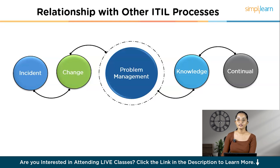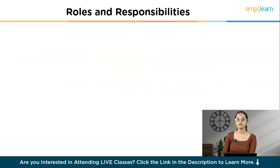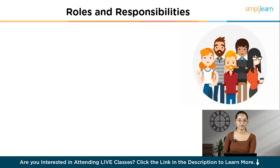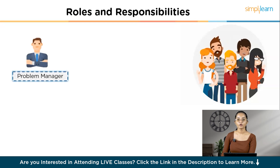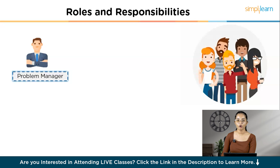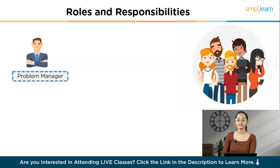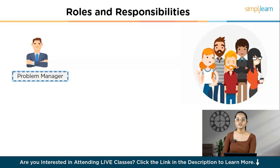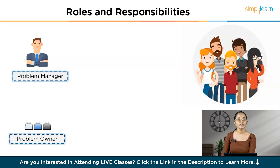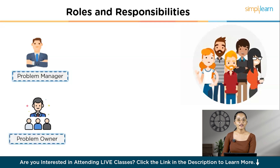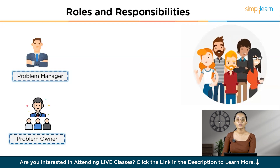To make all this happen, we need a dedicated team with specific roles. The Problem Manager oversees the entire problem management process — identifying problems, assigning tasks, managing investigations, and ensuring issues are resolved on time. The Problem Owner handles specific problems, finds the root causes, develops solutions, and works with stakeholders to fix issues effectively.